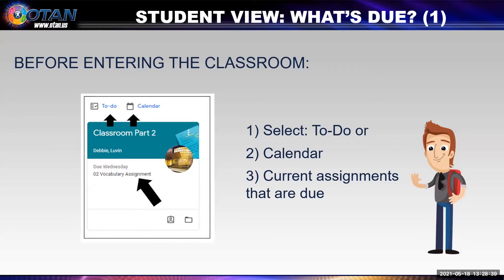We're looking at how a student finds out what's due. The student can find out what's due before they even enter the classroom — there will be a to-do and calendar at the top, with arrows pointing to both, and the large arrow below is pointing to the current assignment: 'Do Wednesday vocabulary assignment.' So even before getting into the classroom, the student is aware of the assignments.